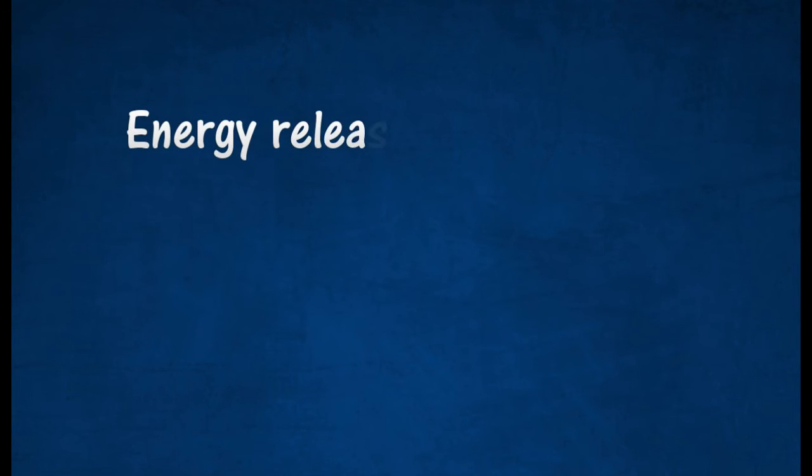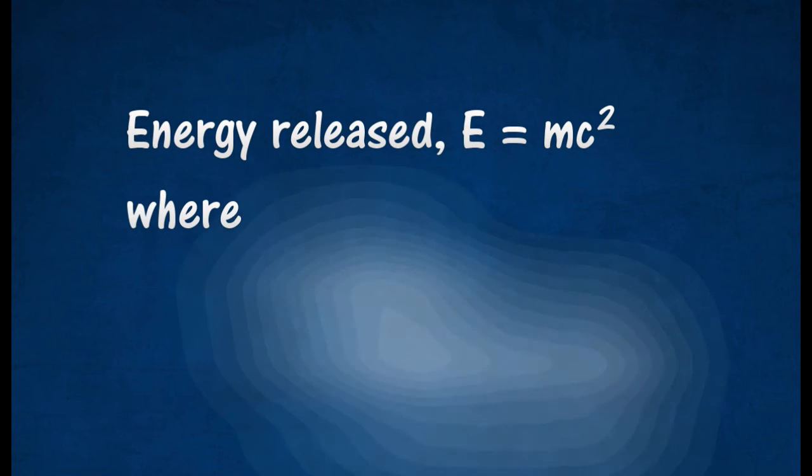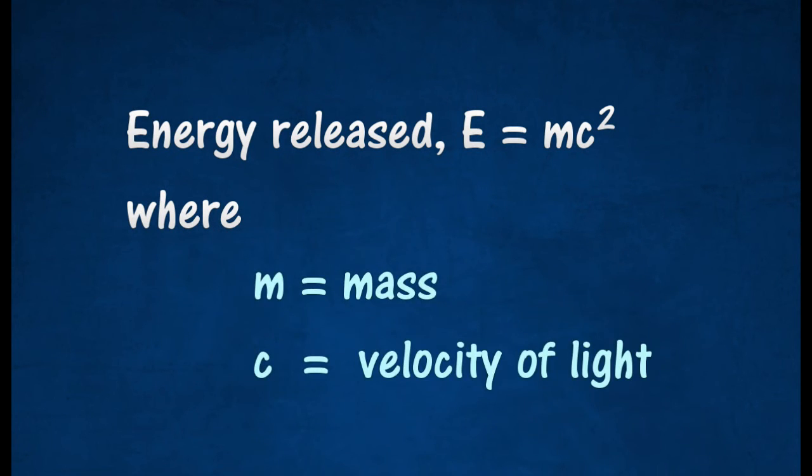The energy released by the fission of every uranium-235 atom is enormous. The amount of energy released from this mass can be calculated using Einstein's equation.